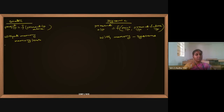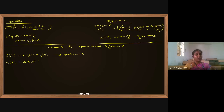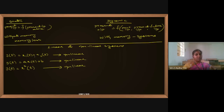Moving to the second classification: linear and nonlinear systems. If y(t) = x1(t) + x2(t) — this is nonlinear. If y(t) = a·x(t) + b — this is also nonlinear. If y(t) = x²(t) — this is also nonlinear.